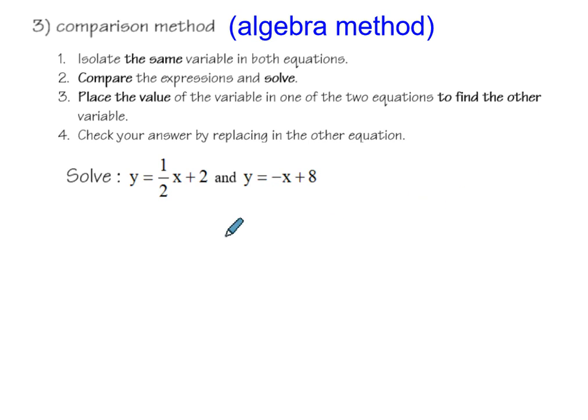So first, what you have to do, you need to isolate the same variable in both equations. Right now, your y is already isolated. You see y is equal to this and y is equal to this. So step one is done because your y is isolated.